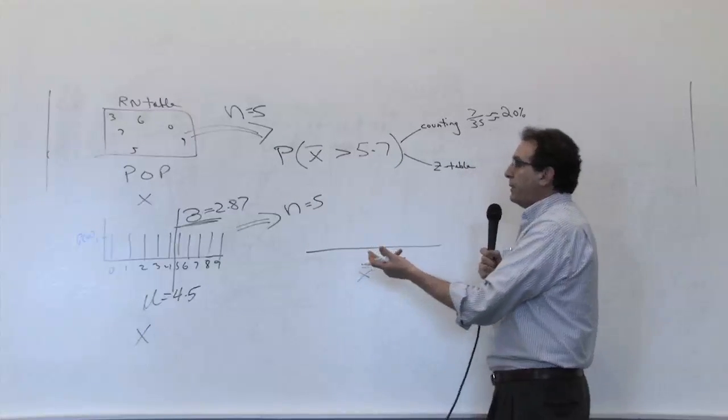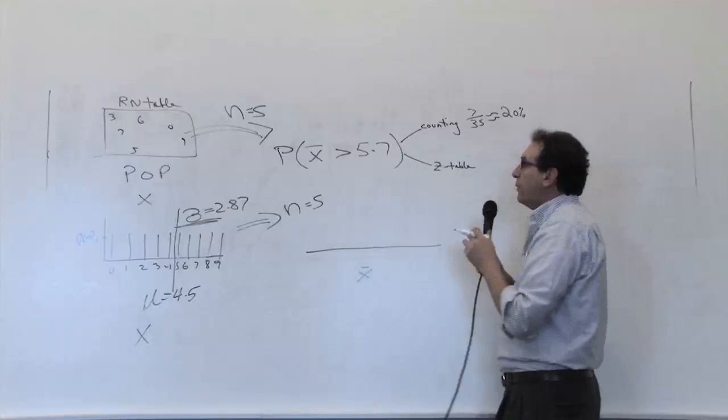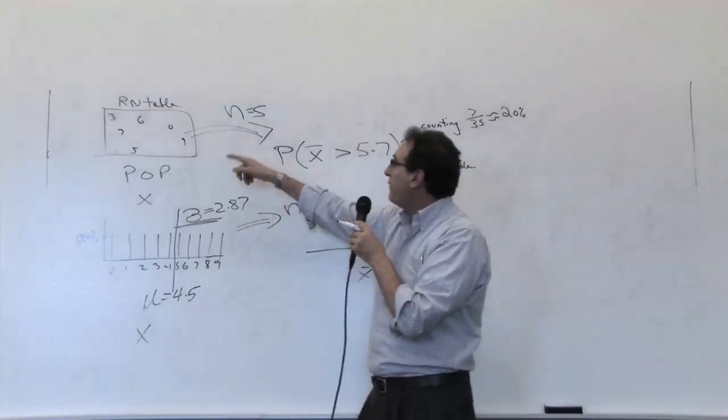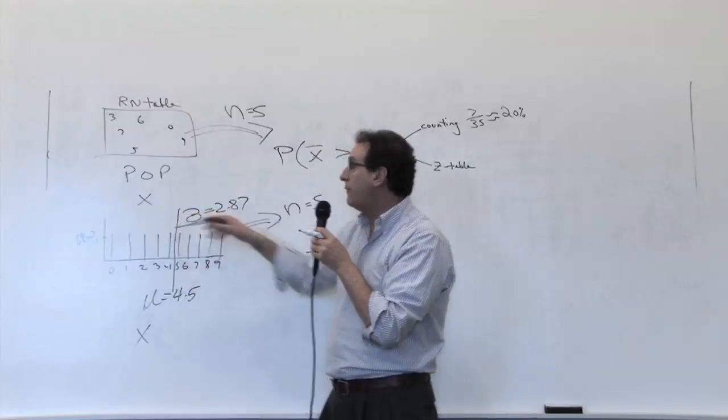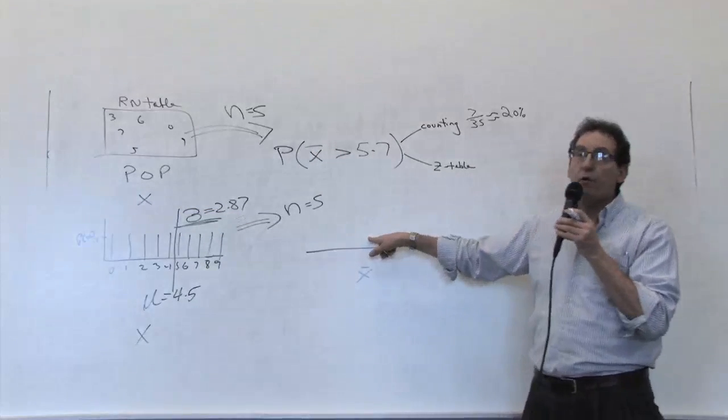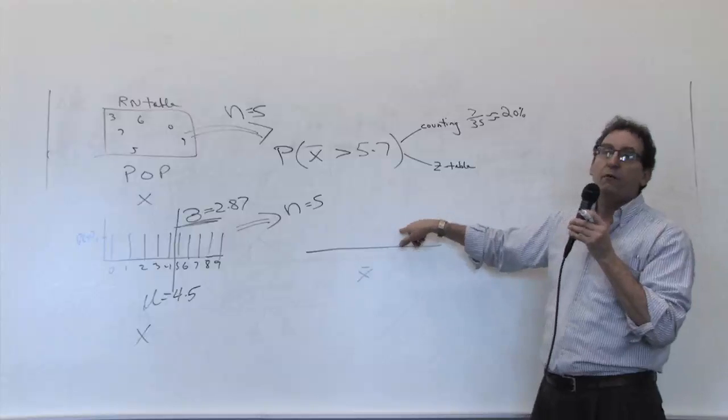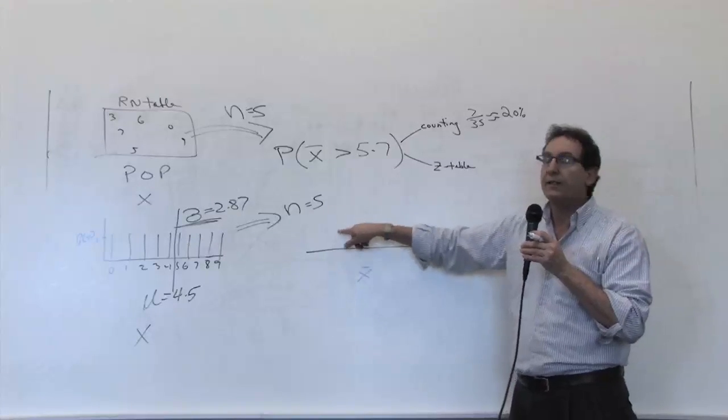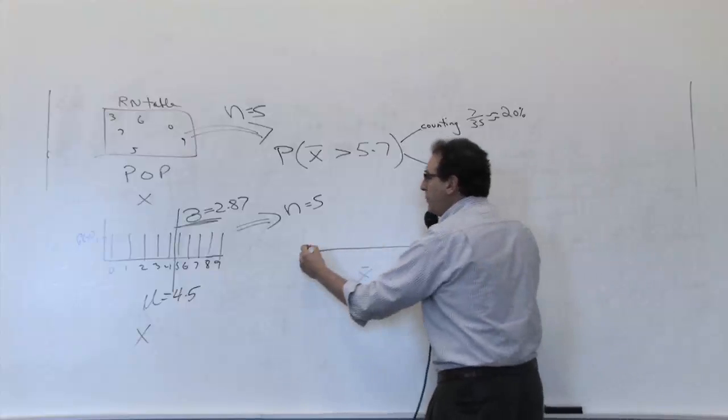We'll call that the X representing individuals in the population. The second picture is called the X bar picture. What do we know about the X bar picture? What is a typical X bar? Well, most X bars should be around, since we're picking five numbers that cluster around 4.5, most averages should be around 4.5, and you may get a 4.6 very often, a 4.8, a 3.8, a 3.6. So, we did this last time. We'll do it again quickly.